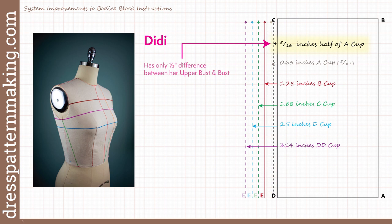So here's an example of why the system needs refining. It was actually women with small breasts that made me realize that there is an assumption built into even the pattern making bust cup system, where the bust cup is determined by the difference between the upper bust measurement and the bust measurement. Now look at Didi — her upper bust is only half an inch smaller than her bust.